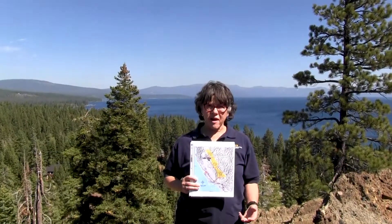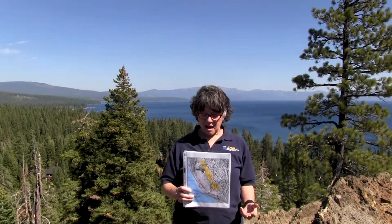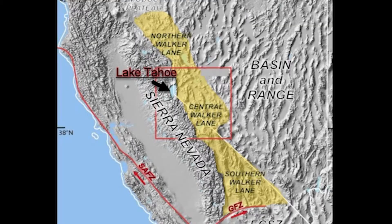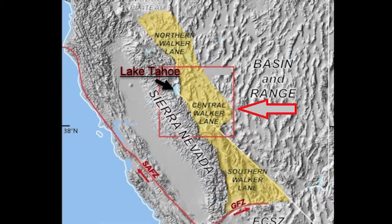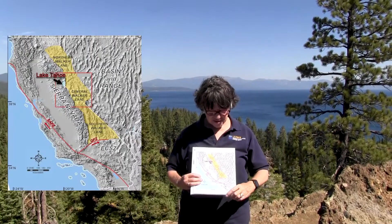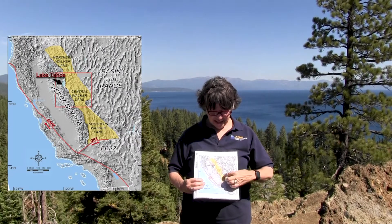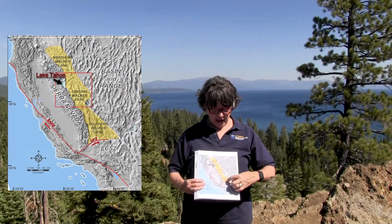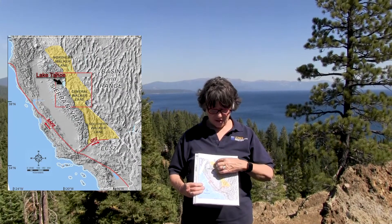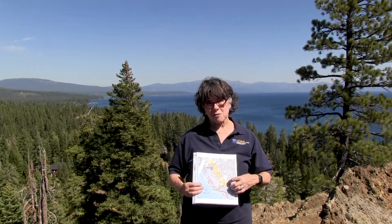Lake Tahoe straddles the California-Nevada state line and it occupies the westernmost basin in the Basin and Range Province. This part of the Basin and Range Province, including the Lake Tahoe basin, is part of the Walker Lane, and right here the crust is pulling apart.